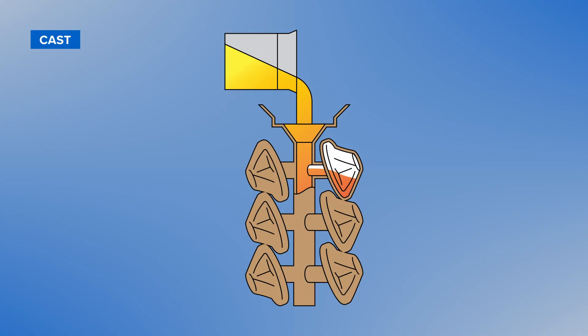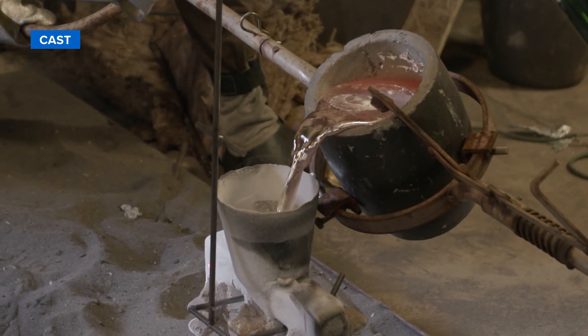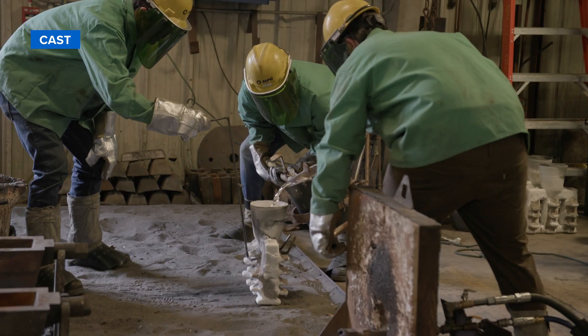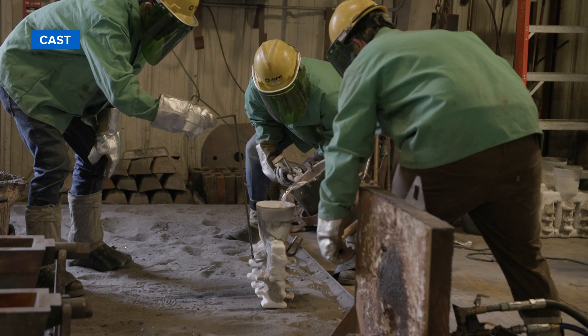After the burnout is complete, begin the metal pouring process. The 3D printing investment casting workflow is suitable for all alloys. Here, molten aluminum is being poured into the hollow investment to create an aluminum impeller.